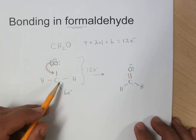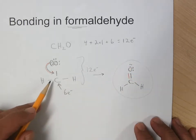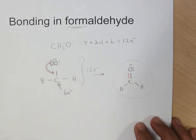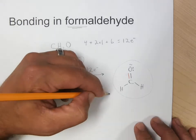And you'll notice as I transform to the dot structure, I also transform the geometry of this, because with three electron domains,